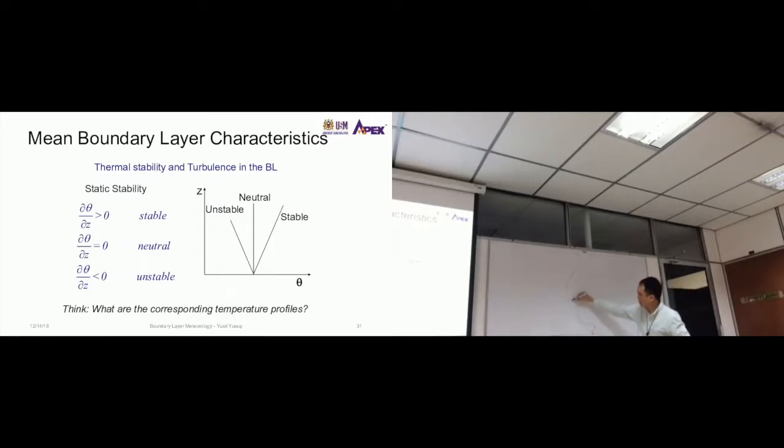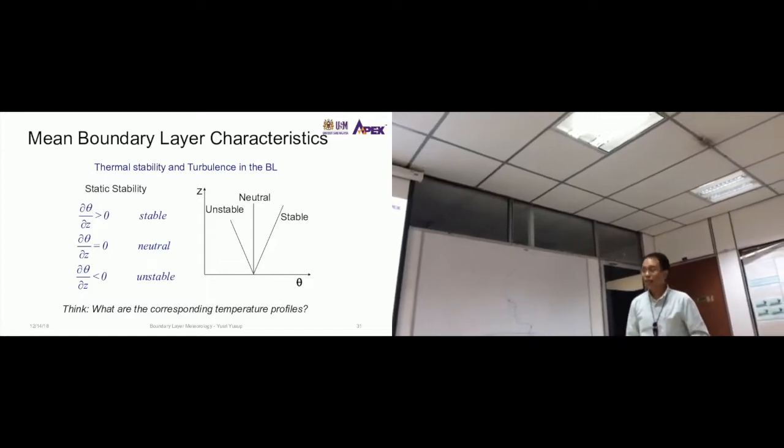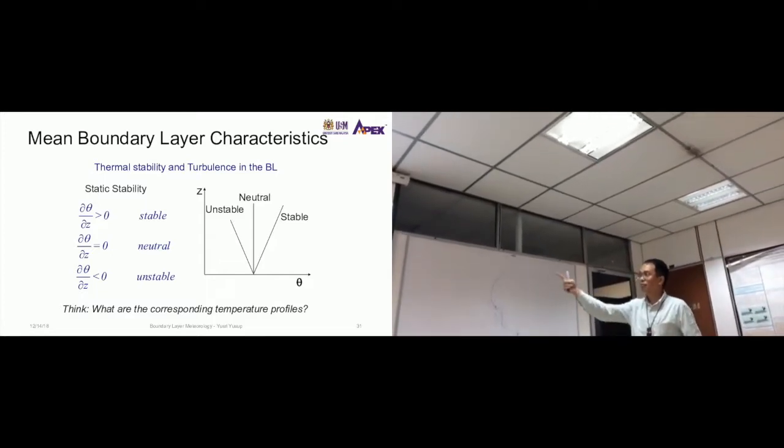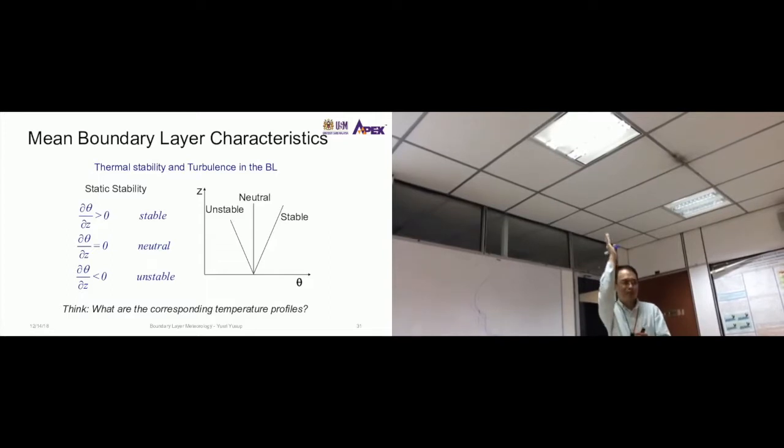When you plot this, you can get an average temperature profile. But if you just measure for one location, you might have a wrong interpretation. The concept is simple: it's just the temperature difference with height. If it's more than zero, positive slope, it's stable. If it's about zero, it's neutral. If it's negative, less than zero, it's unstable.